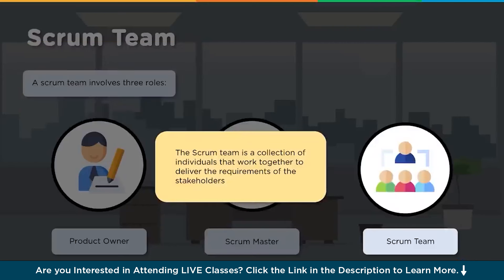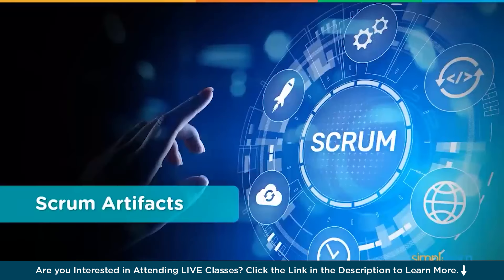The scrum team is the collection of all individuals who work together to deliver the requirements of stakeholders - the self-organizing team we discussed earlier. Each team member has various different capabilities and contributes at the individual level while complementing the team as a whole. The team should have a clear understanding of the deliverable - whether the features and functionality being created will provide the value and requirements fulfillment needed for customers.